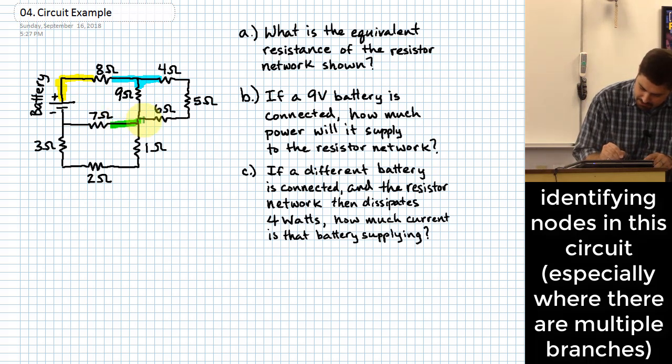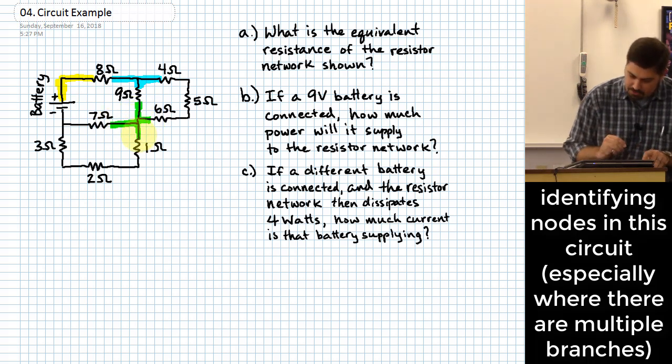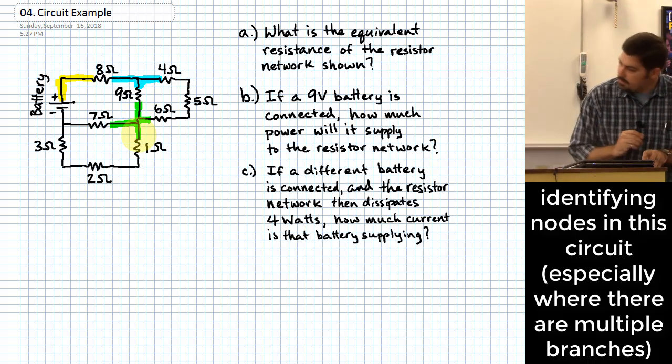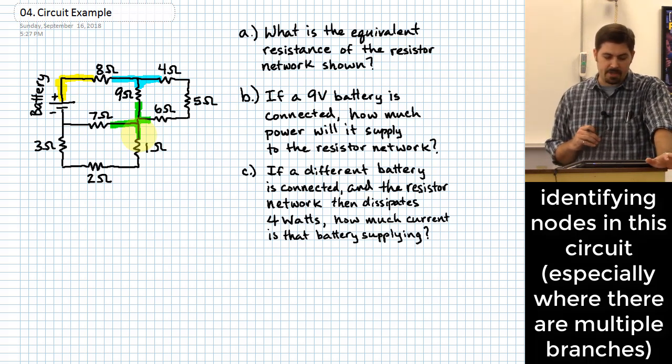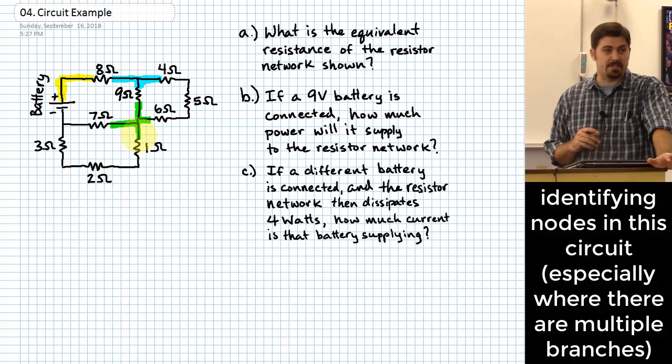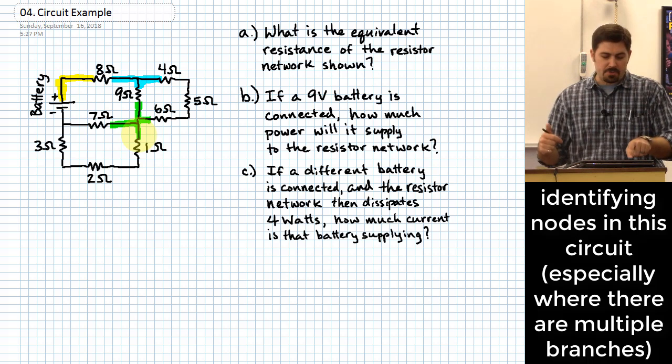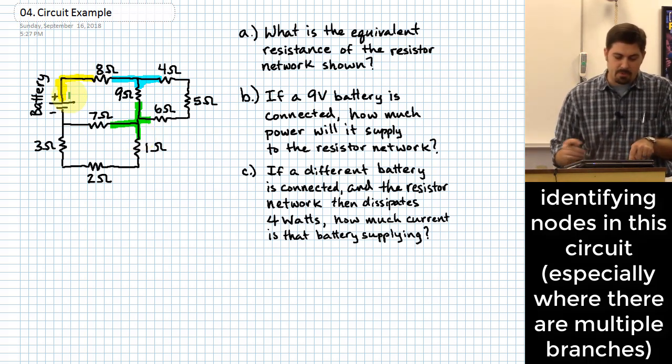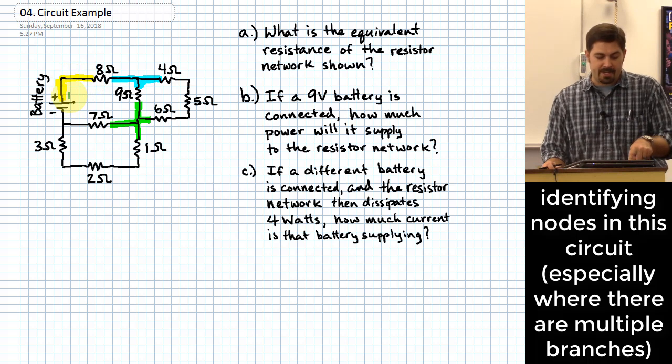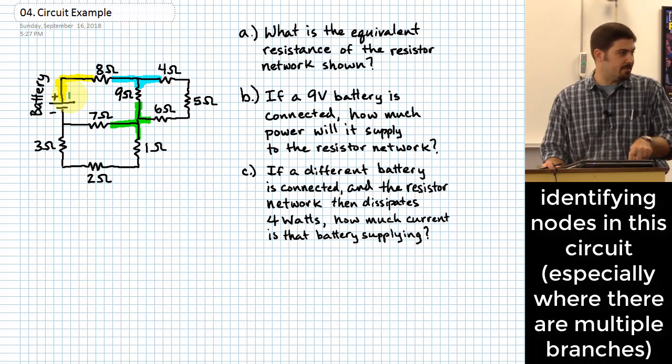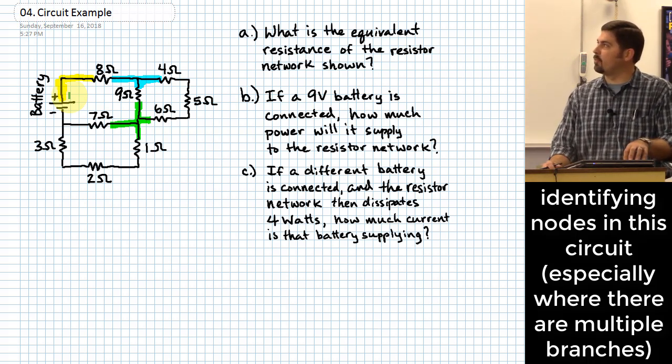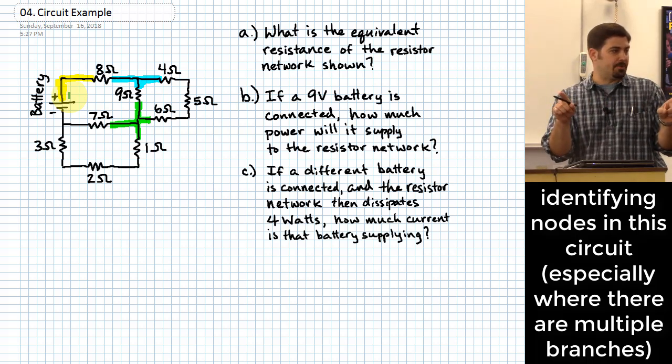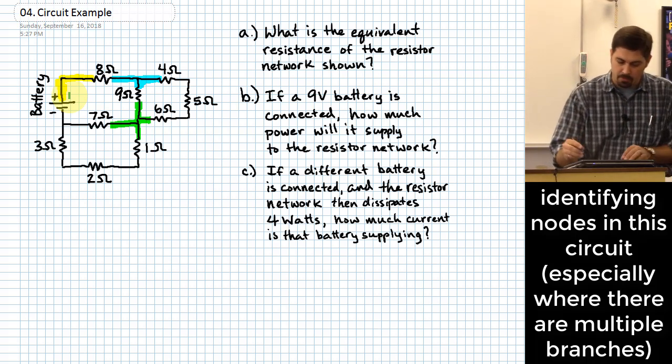And I can do this at other places too. So I can say that's a node right there. We can kind of do this in multiple places. The thing that actually really matters here is for us to find the places where we have nodes where there can be a split in where the current goes. That very first one I identified up there with the yellow, a lot of times we won't even really spend a lot of time trying to identify that as a node because it's not super interesting. There's only one place the current can go.